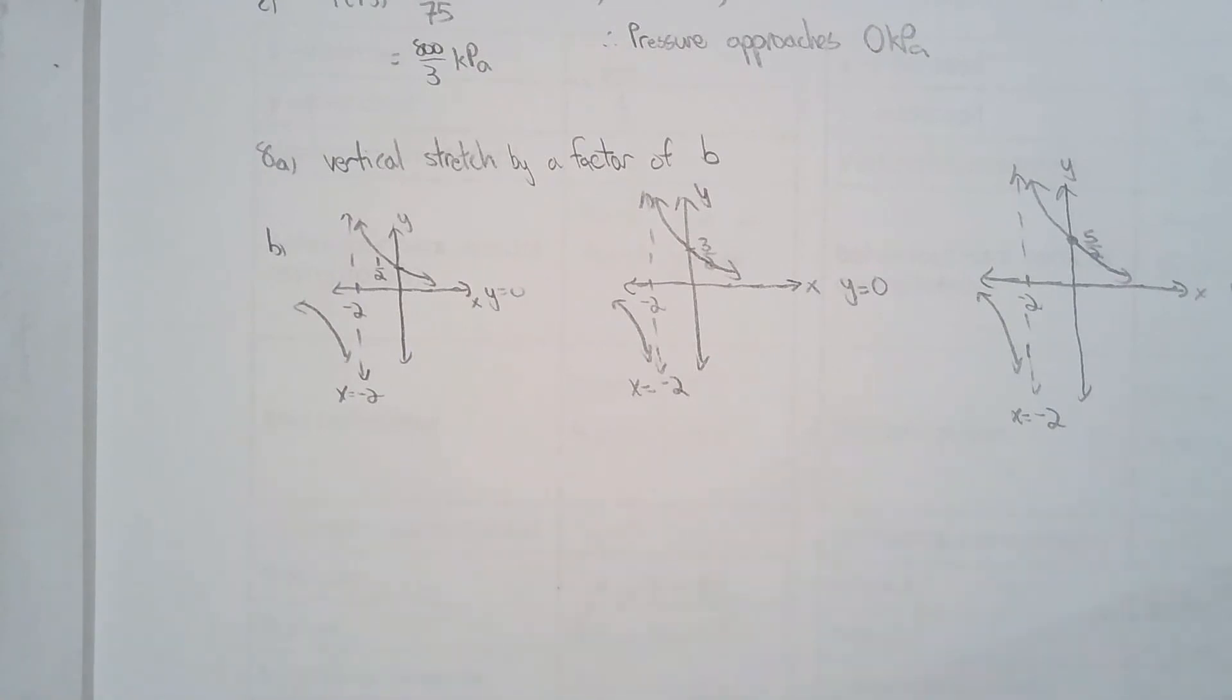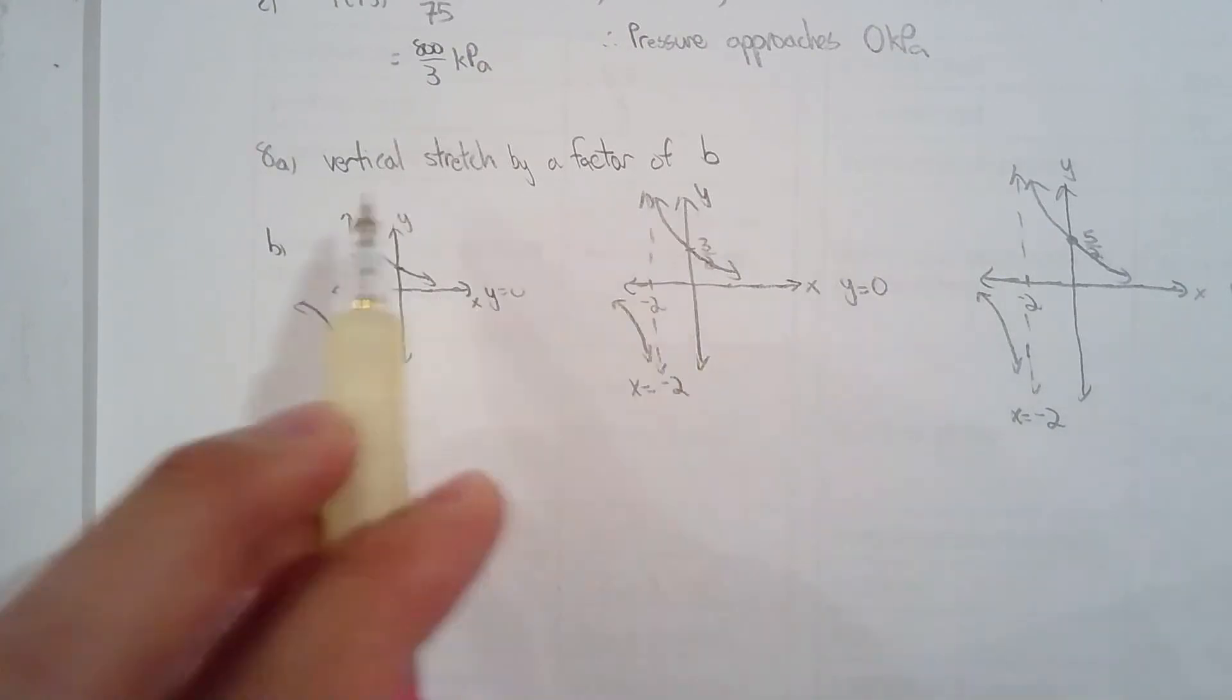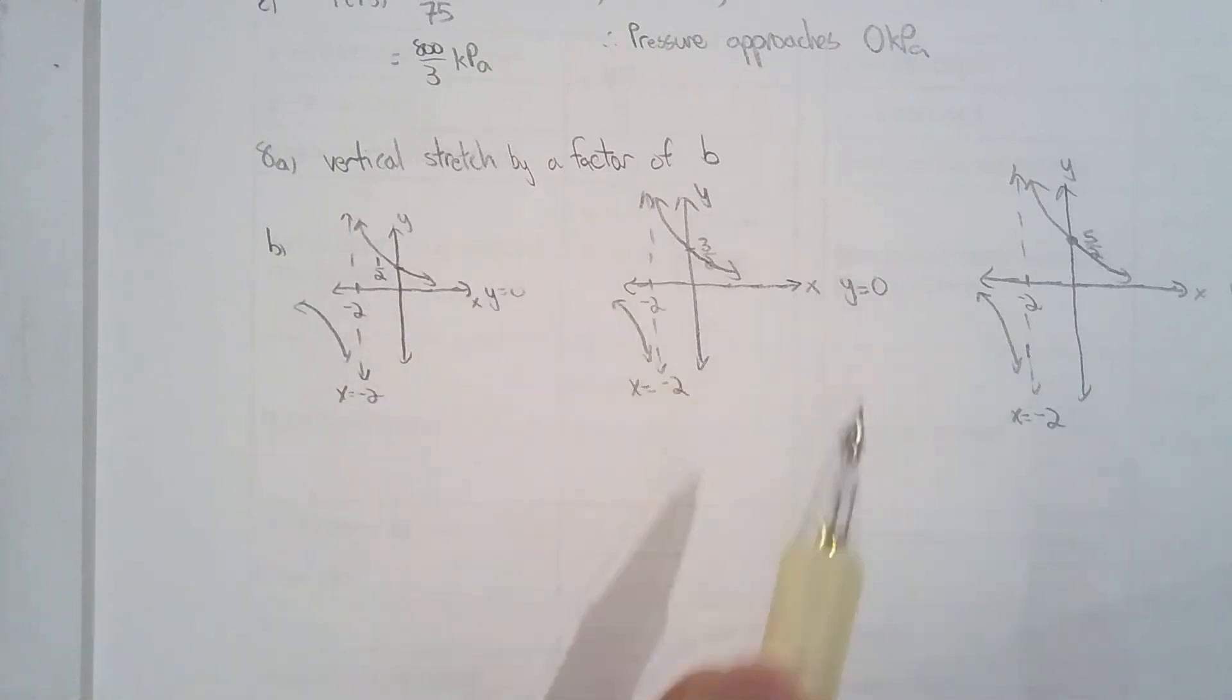Question 8 is just a refresher on transformations. I wouldn't put too much emphasis on question 8. But B is telling you what the vertical stretch factor is. And you can tell how as you work with each function here, 1 over x plus 2, 3 over x plus 2, and 5 over x plus 2.